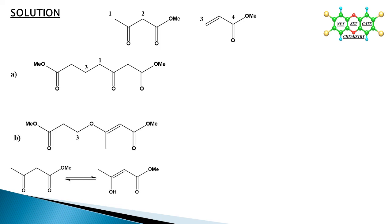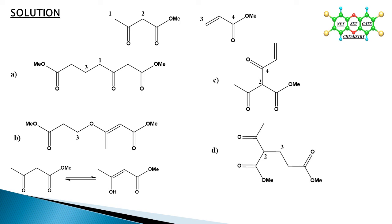In option C, the most acidic proton is abstracted by methoxide ion, and the reaction center is at the 4-position. In the mechanism, the methoxy group is eliminated — this is the Michael addition reaction. Knowing the mechanism of the Michael addition reaction well, the reaction centers visible in the product confirm that option D is the correct answer.